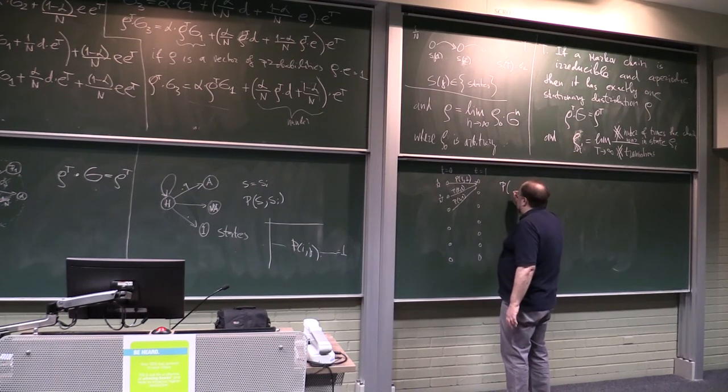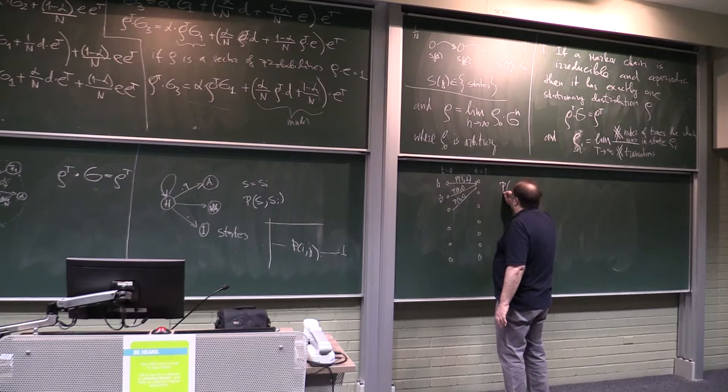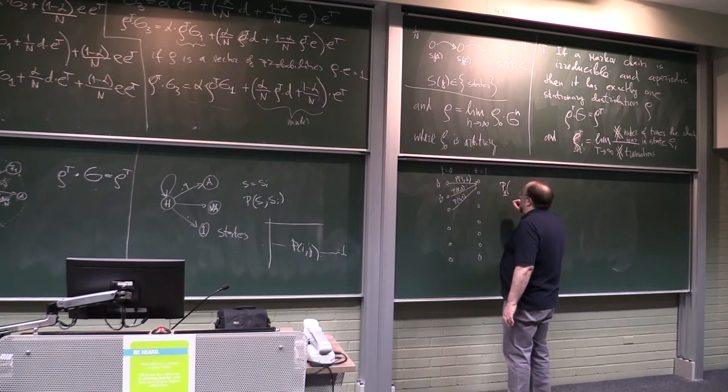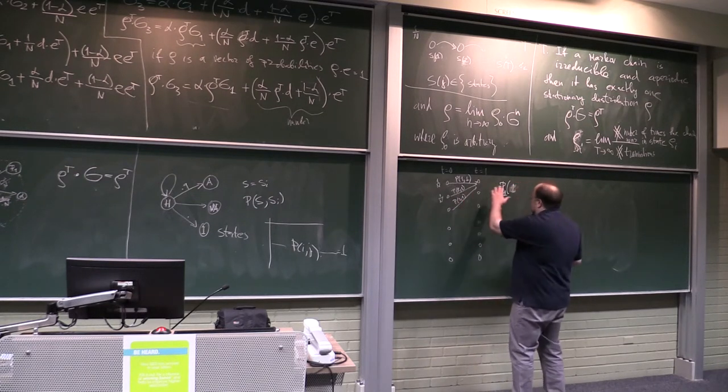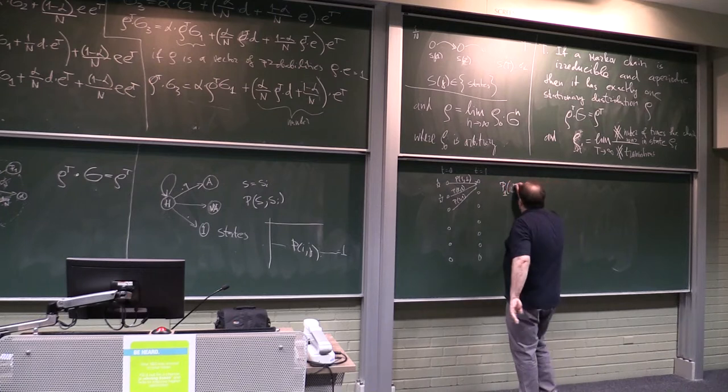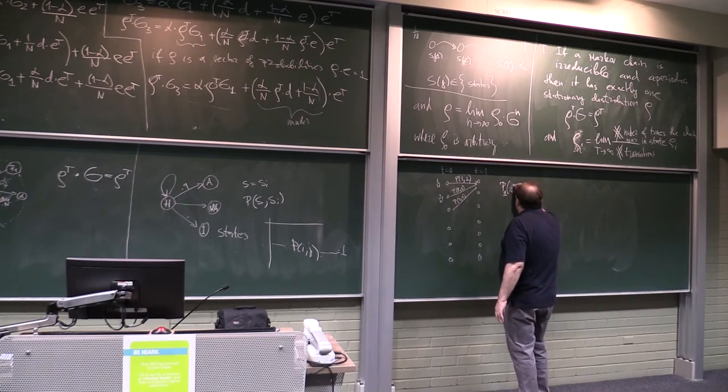Probability to be in the, after one step, to be in the state at any—obviously this works for any state—to be in a state k, probability.